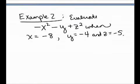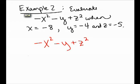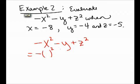In the second example, I want to evaluate the expression negative x squared minus y plus z squared. My first step is to remove each variable and replace it with empty parentheses, being careful to put the exponents on the outside of the parentheses. So I have negative parentheses squared minus parentheses plus parentheses squared.